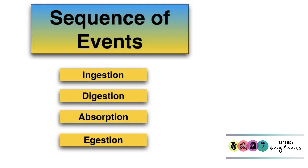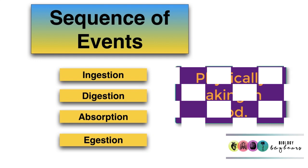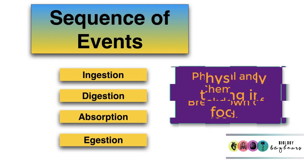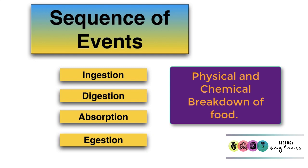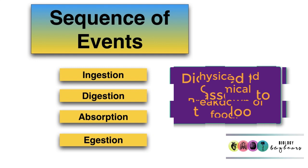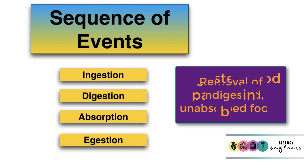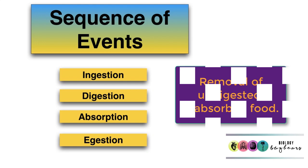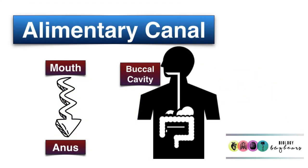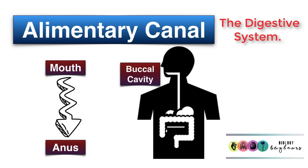Nutrition follows a very ordered sequence of events. First is ingestion — physically taking in the food. Then digestion, the physical and chemical breakdown of that food into smaller, more soluble subunits. Then absorption, when these subunits pass into the blood. And then egestion, which is the removal of undigested, unabsorbed food material through the anus. This whole sequence of events happens in the alimentary canal, another name for the digestive system.